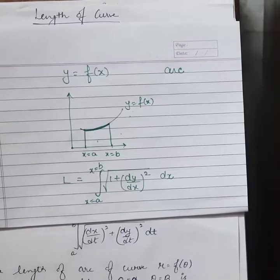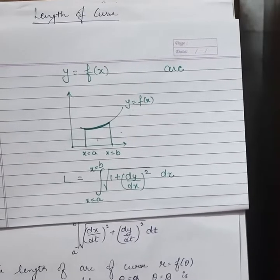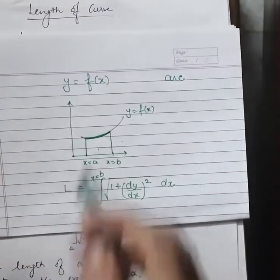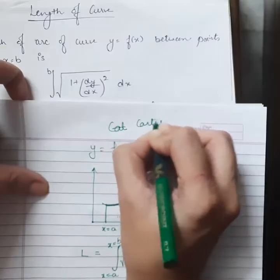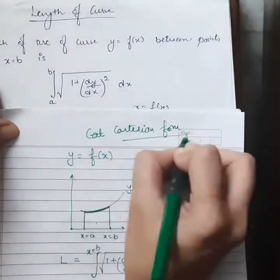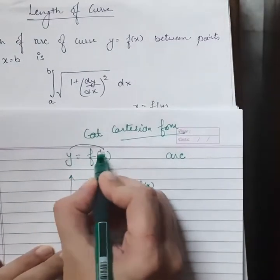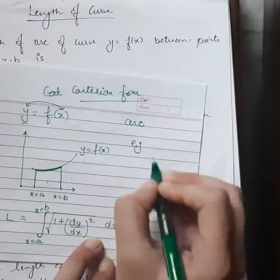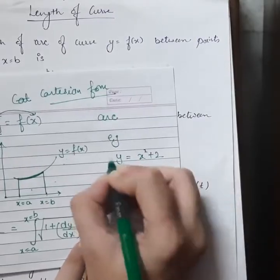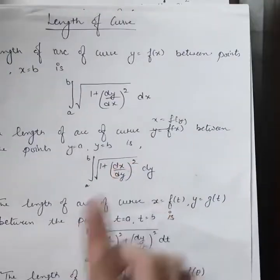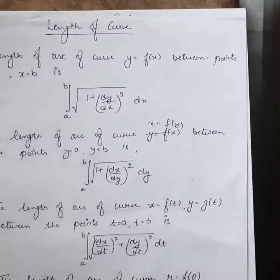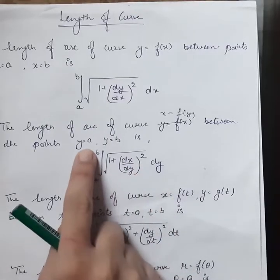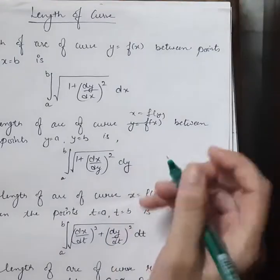We have various forms to calculate the length of curve depending on the type of equation given. This form using dy/dx is known as the Cartesian form, where the equation between x and y is given and y is defined in terms of x — for example, y equals x² + 2. The second form is when the equation of x is given in terms of y; then the length of curve is given by the integral of the square root of 1 plus (dx/dy)² dy, between the limits y equals a and y equals b.